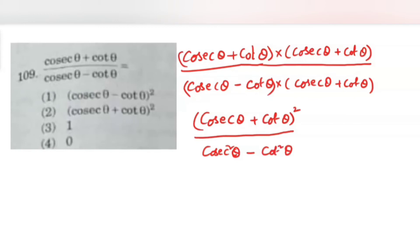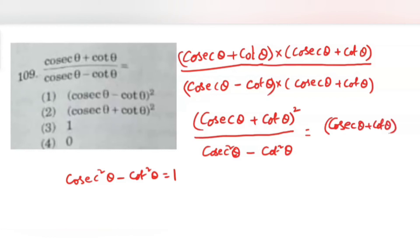We have the trigonometric identity: cosec squared theta minus cot squared theta equals 1. Substituting 1 in the denominator, we get cosec theta plus cot theta whole squared divided by 1, which is simply (cosec theta plus cot theta) whole squared. That is the answer. Option 2 is the correct answer.